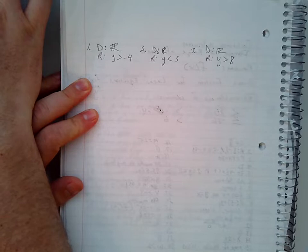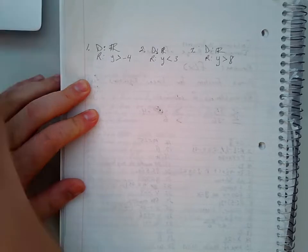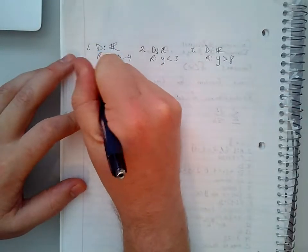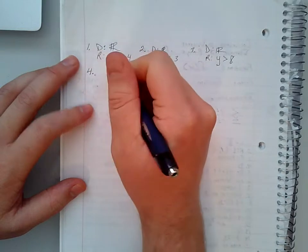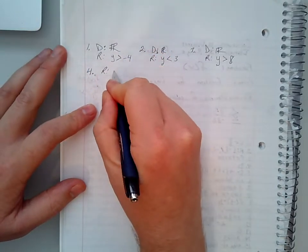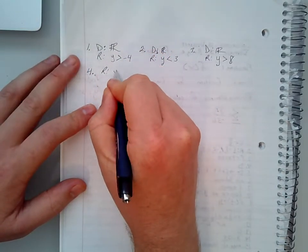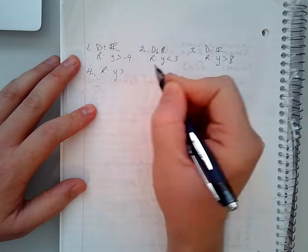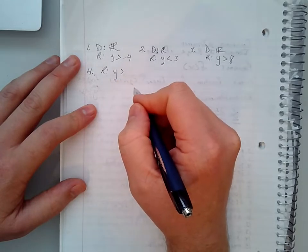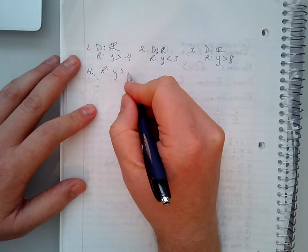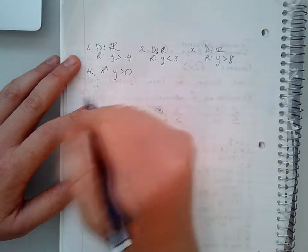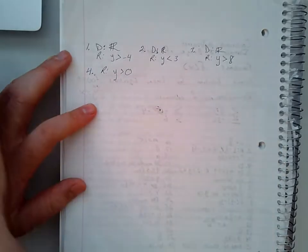Number four asks for the range of the exponential function — same idea. We know it is going to be y is greater than, because we have a positive coefficient out front, either positive one or positive 120. The asymptote is zero, so y is greater than zero.